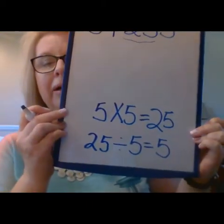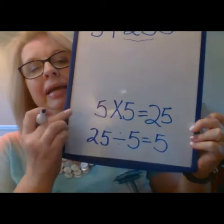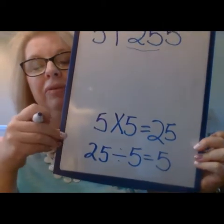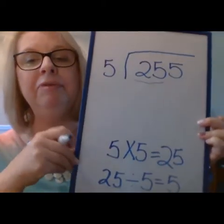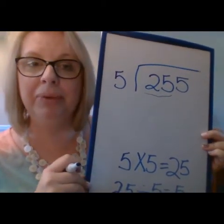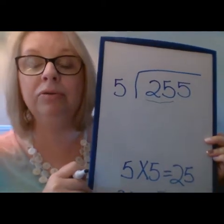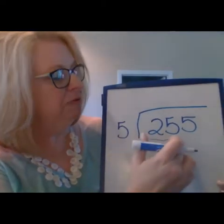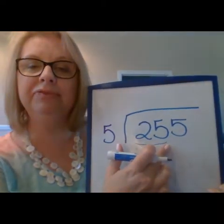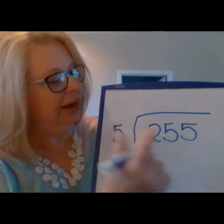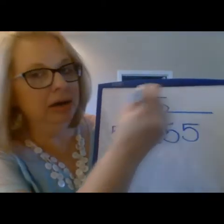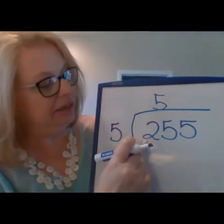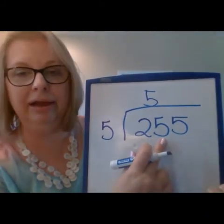We've been doing that for quite a while in class. I take the product 25 and I put it down here, so multiplication and division are related. If I know that five times five is 25 — and you'll have to use your multiplication chart to do the math this week — five goes into 25 five times. So I put my five up here. I didn't put it on top of the two because five doesn't go into the two; it goes into 25.